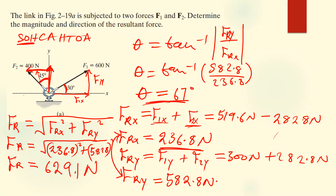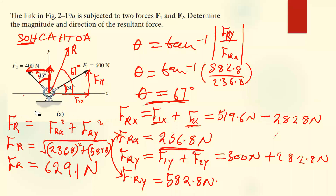If you draw the resultant vector, the angle is 67 degrees. This makes sense — you can verify that your solutions are reasonable. Since all the forces are on the positive Y side, it would not make sense for the resultant to be on the negative Y axis. So our resultant force and its direction are correct.